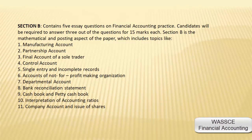Section B of Paper Two contains five essay questions on financial accounting practice. Candidates will be required to answer three questions out of five for 15 marks. Section B is the mathematical and posting aspect of the paper, which includes topics like: